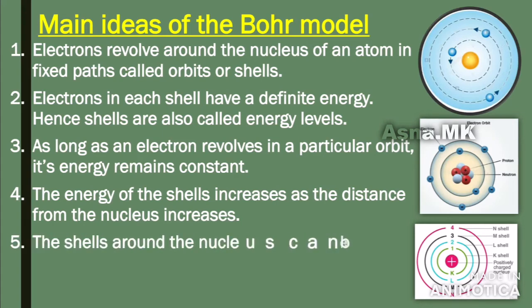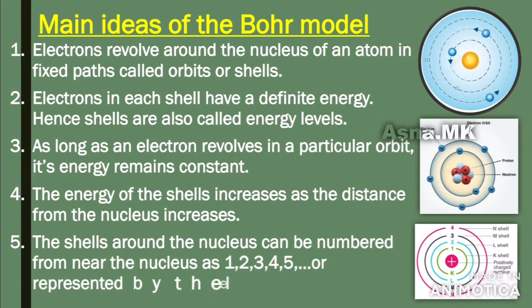Then fifth: the shells around the nucleus can be numbered from near the nucleus as 1, 2, 3, 4, 5, or represented by the letters K, L, M, N, and O. So the number of shells is 1, 2, 3, 4, 5 shells.